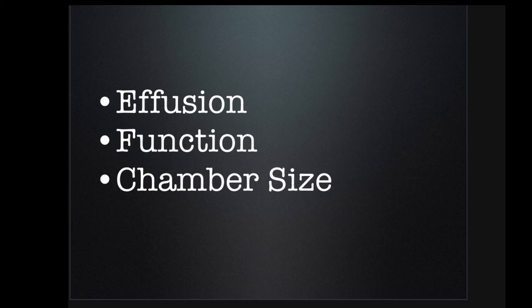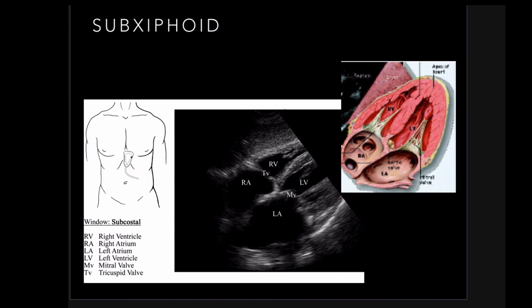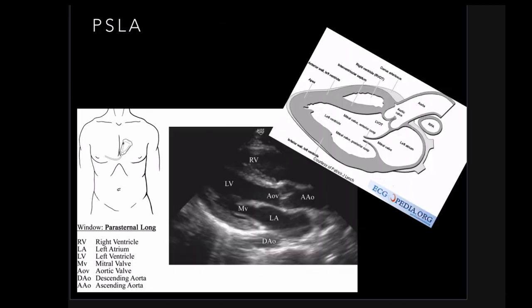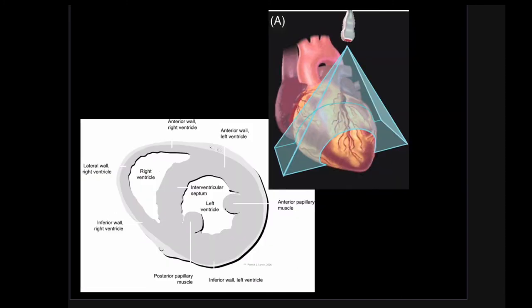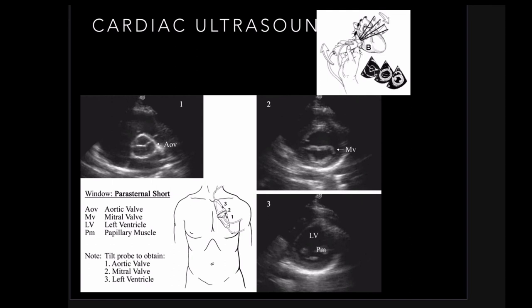Using those three questions as a teaching tool — effusion, LV function, relative chamber size — maps onto the four views. Sub-xiphoid is really just about is there an effusion or not. Parasternal long and parasternal short are all about LV function, though they also help with wall motion abnormality and valvular pathology. Apical four is really about relative chamber size.